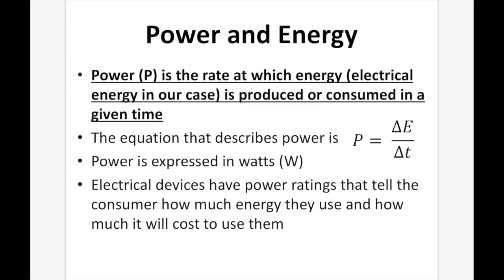Power and energy. Power, P, is the rate at which electrical energy is produced or consumed in a given time. The equation is P = ΔE / Δt, expressed in watts (W). Electrical devices have power ratings that tell the consumer how much energy they use and how much it will cost to use them.